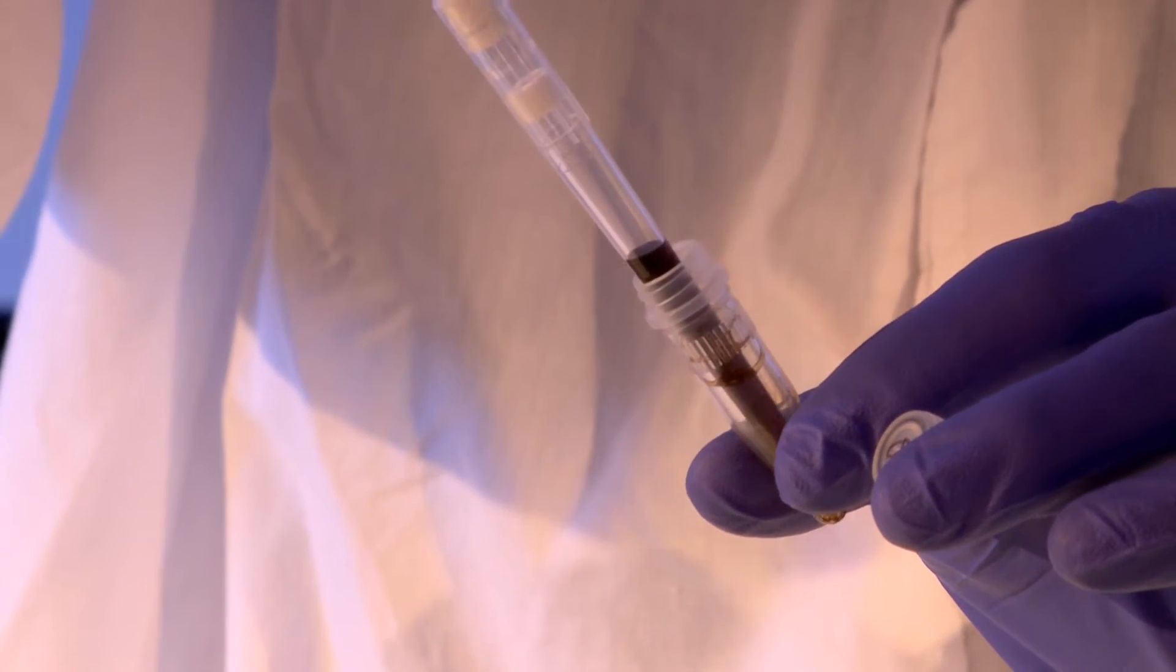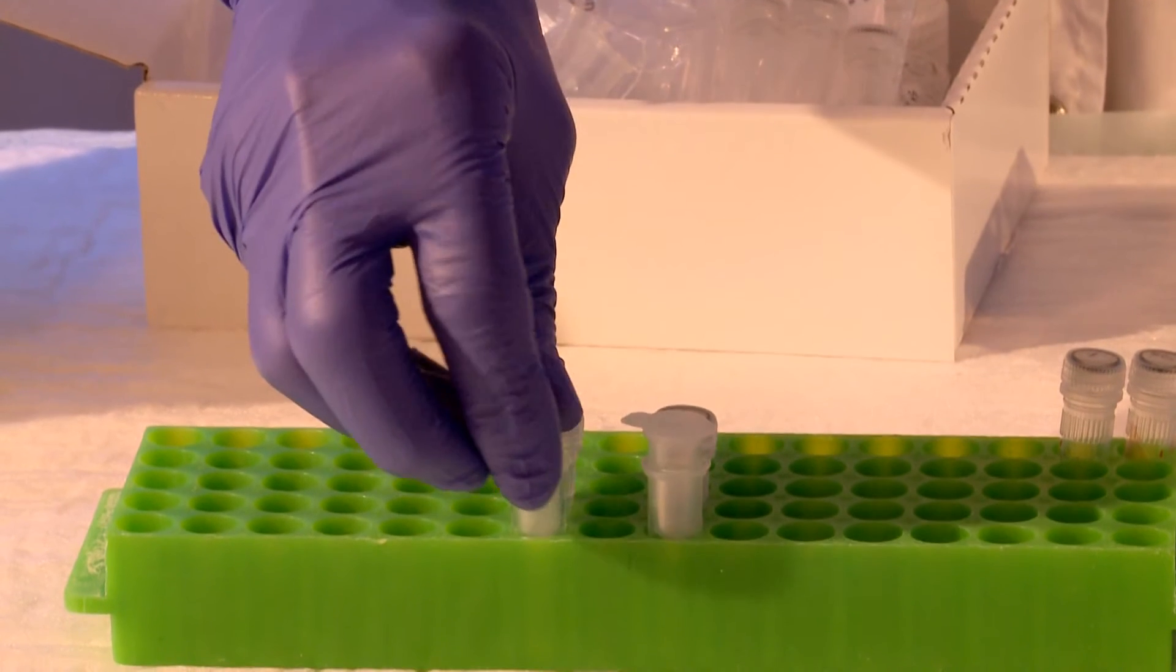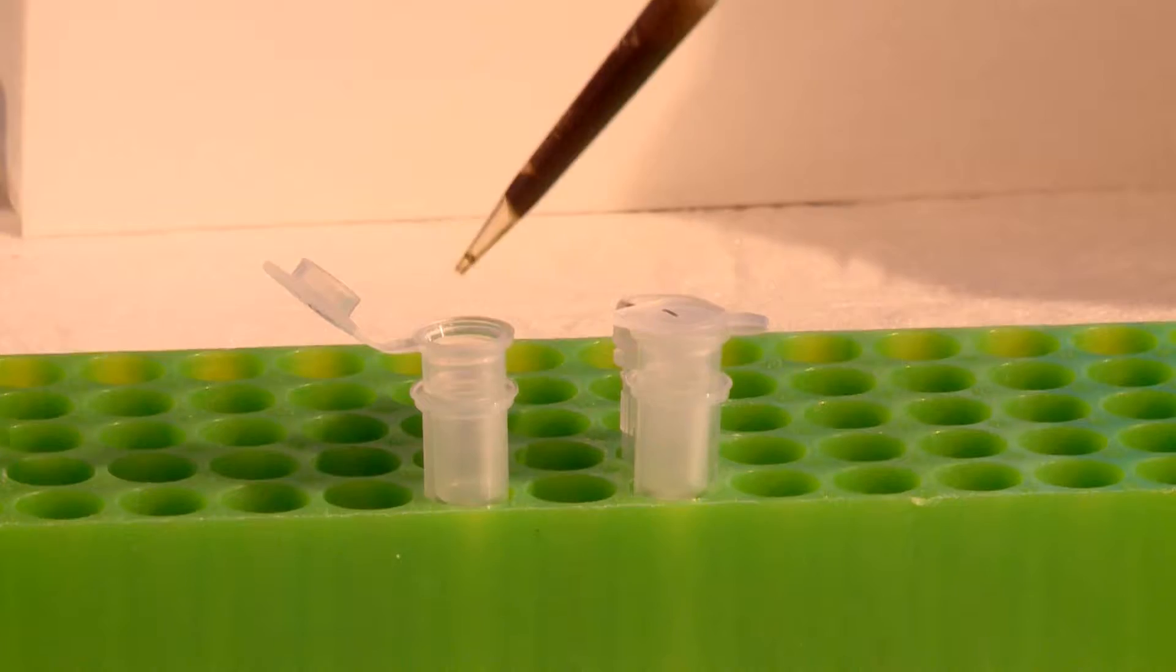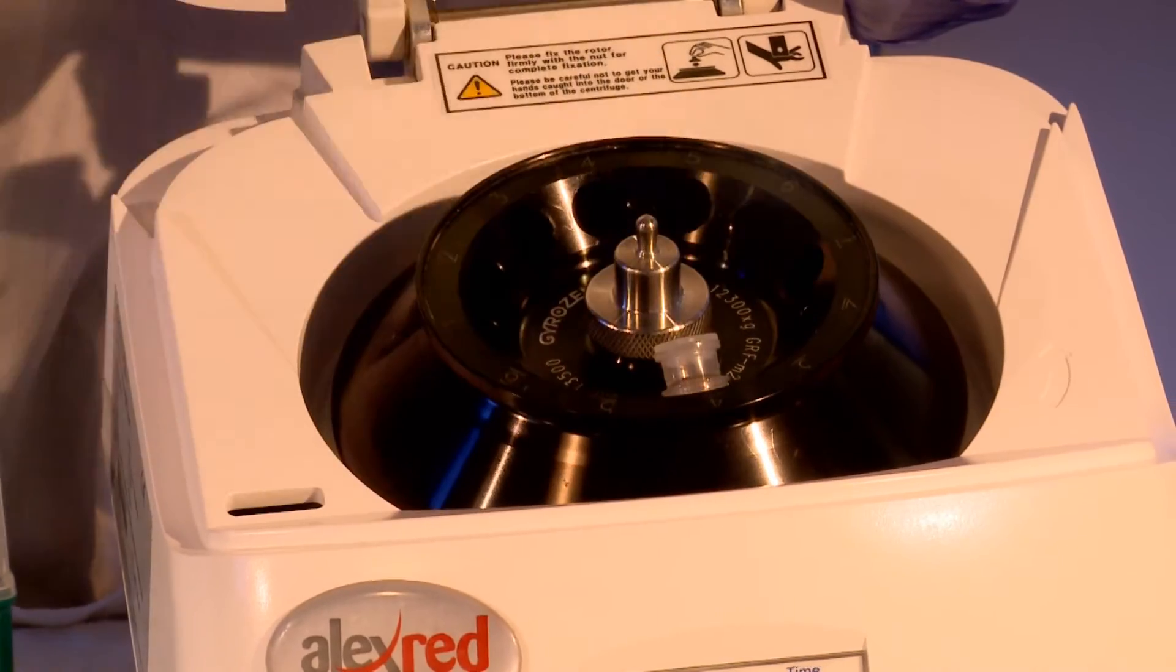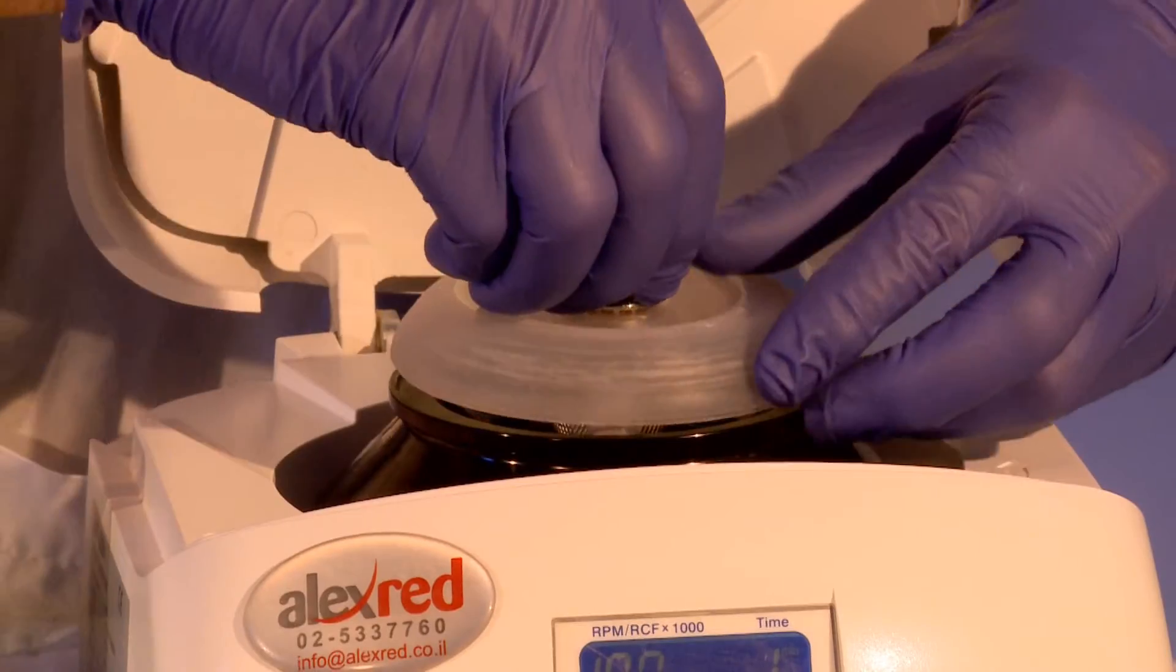Transfer the sample buffer A mixture to a spin column which has been placed into a collection tube. Spin in a microcentrifuge at 10,000 G for 1 minute.